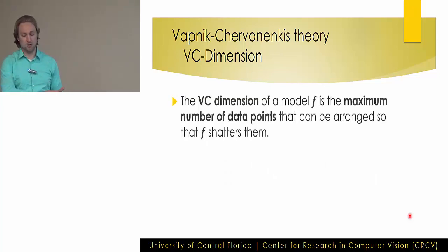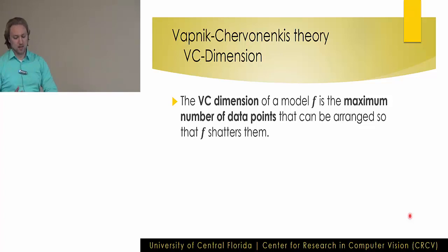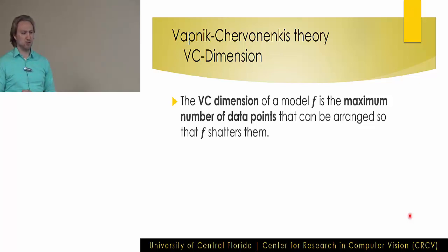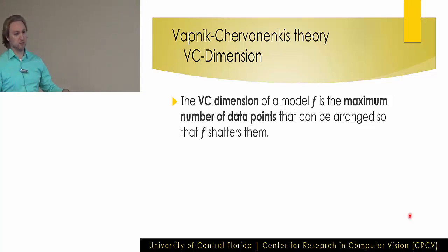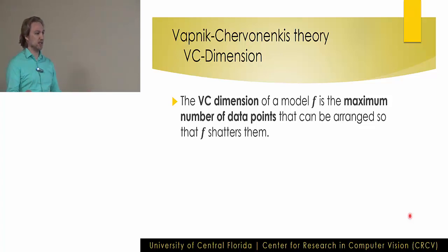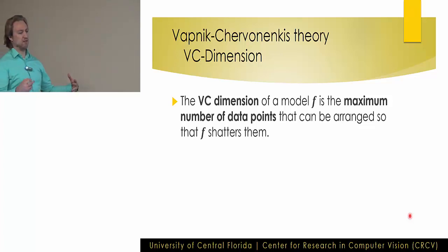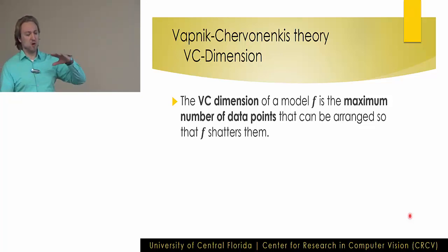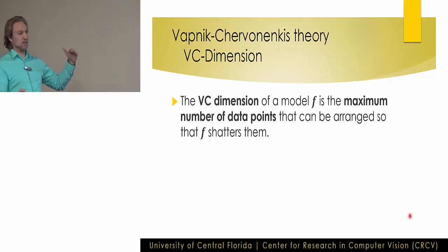How VC dimension relates to model capacity: the VC dimension of a model F is the maximum number of data points that can be arranged so that F shatters them. We have a model and some input data — say a million different images. If F can perfectly label all one million with some setting of the parameters, then F shatters those million inputs. As we increase the number — two million, four million, eight million — there will be some point at which F can no longer perfectly label all inputs. Whatever that maximum number is, that is the VC dimension of our model.